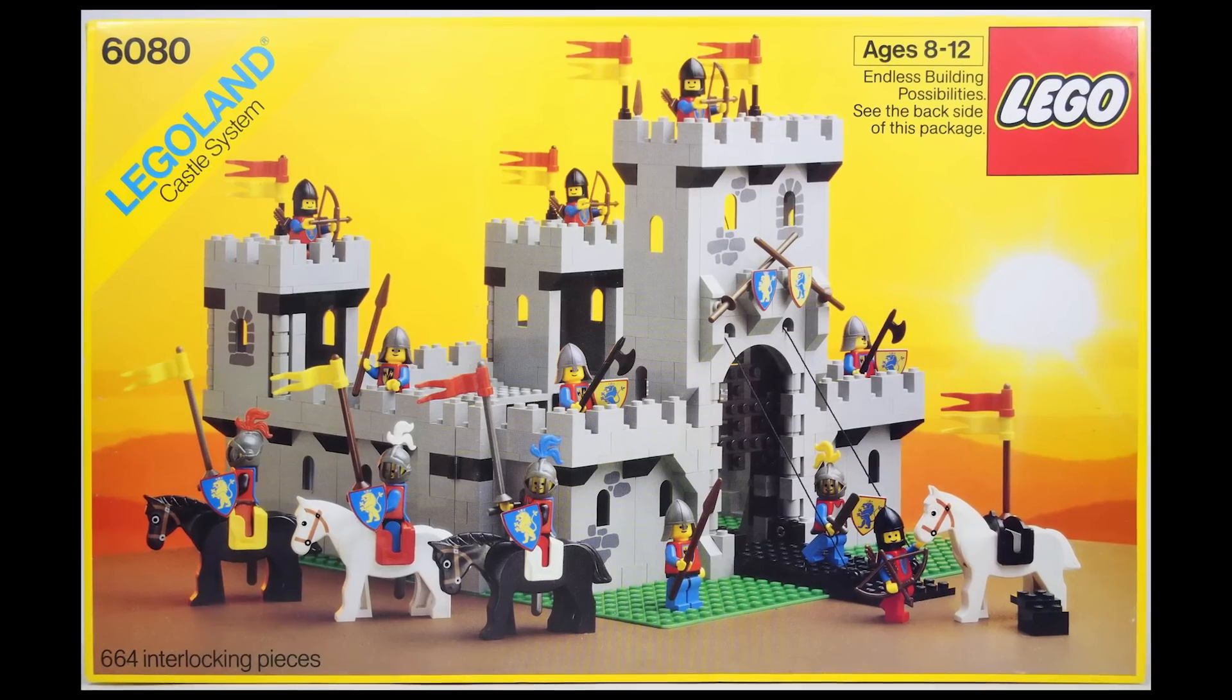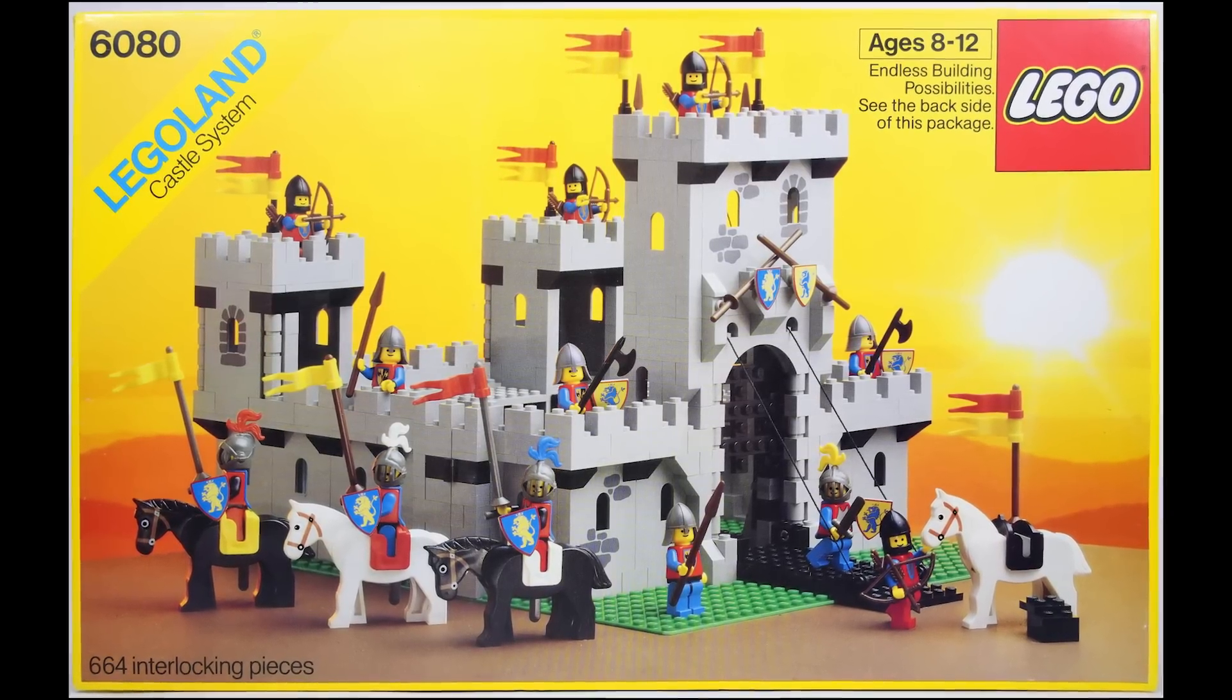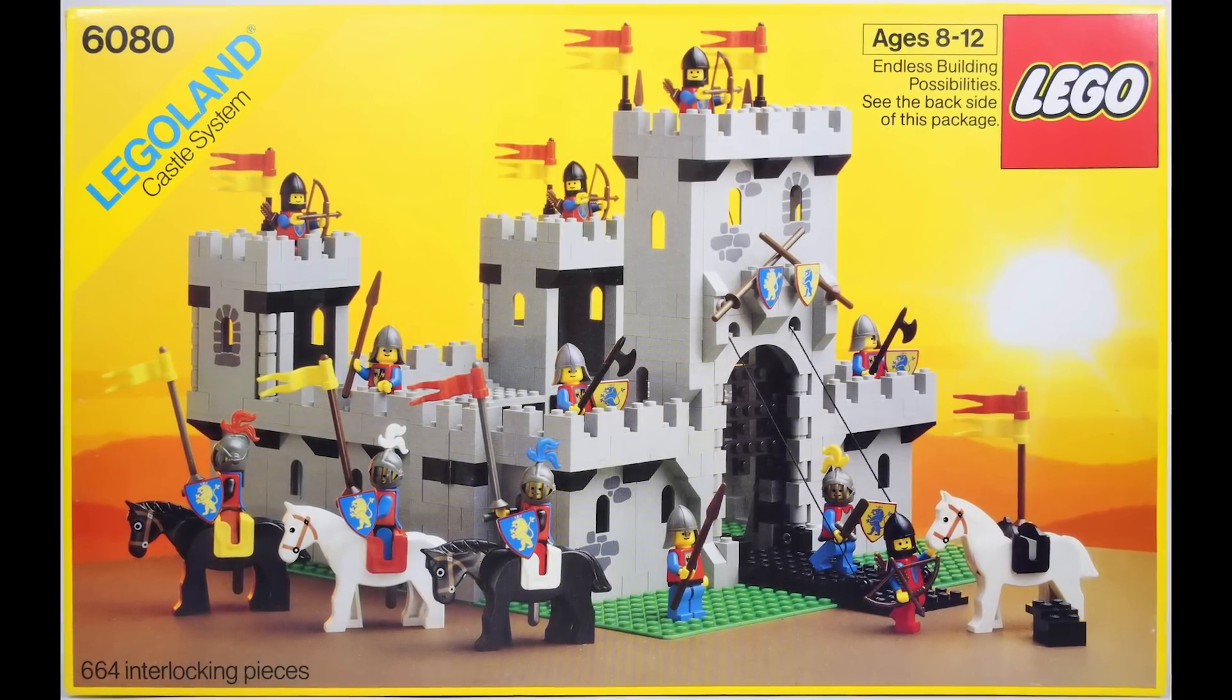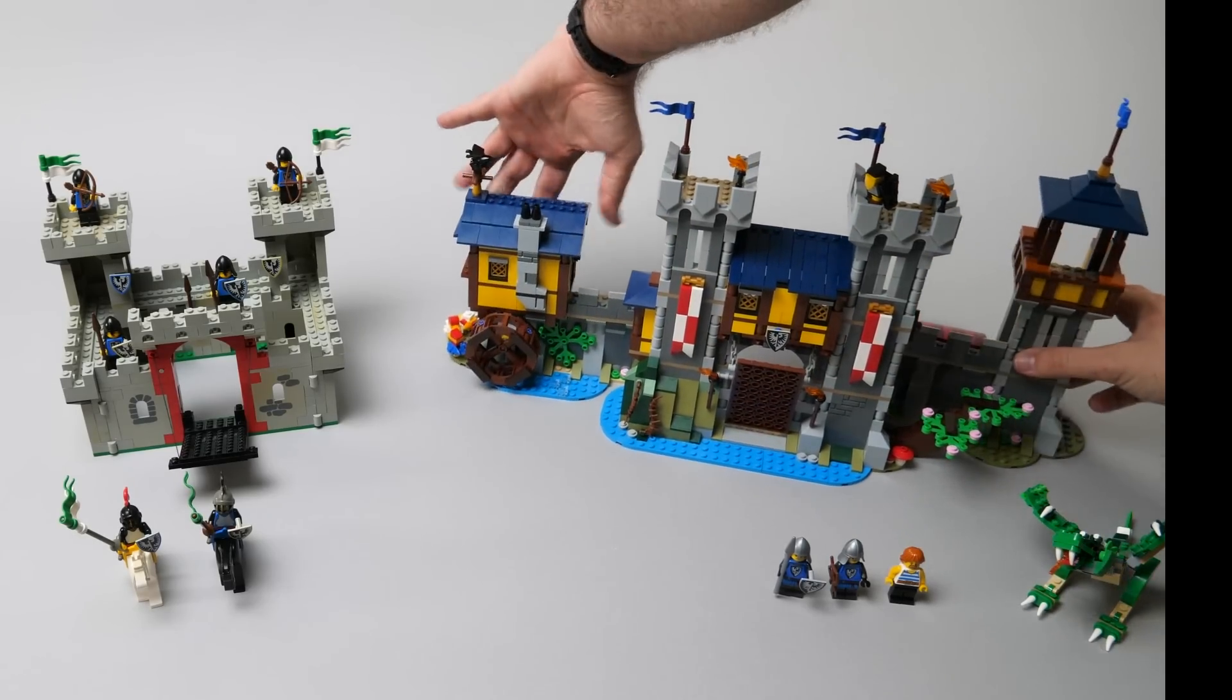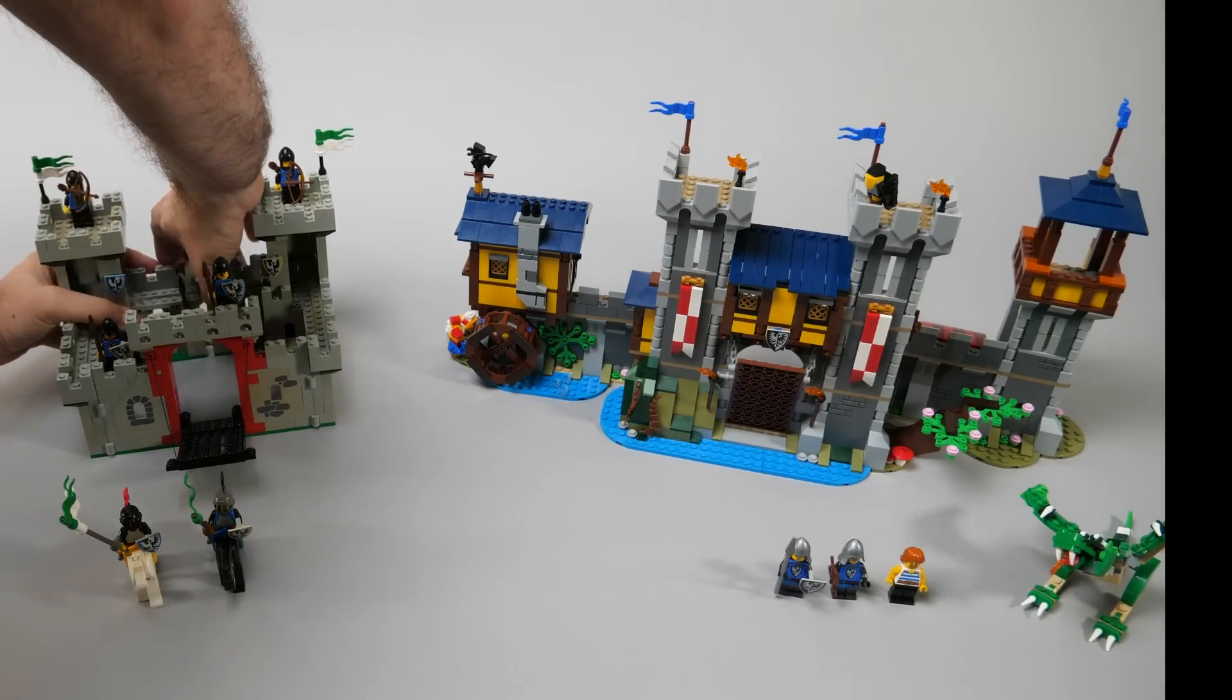The set 6080 was mentioned as a reference, but that was simply called King's castle and it had Lion Knights in it. I did not have that set. As you could see in my comparison video last year I had the smaller version, the 6075, and I compared it to the Creator Expert 3 in 1 set.